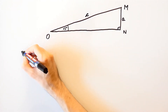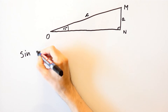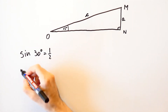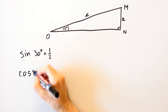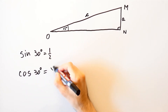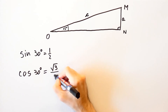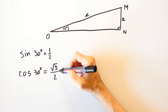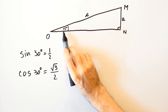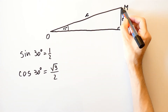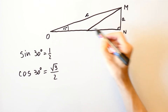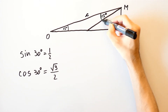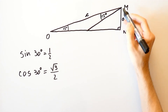In the previous video we saw that the sine of 30 degrees is equal to 1 over 2, and the cosine of 30 degrees is equal to the square root of 3 over 2. Can we use that to find the sine and the cosine of 15 degrees? We can divide this angle into two parts so that one part is 15 degrees and the other is 60 degrees.